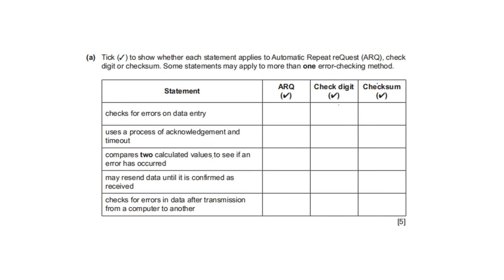Tick to show whether each statement applies to ARQ (automatic repeat request), check digit, or checksum. Some statements may apply to more than one method. Checks for errors on data entry — check digit. Uses a process of acknowledgement and timeout — ARQ. Compares two calculated values to see if an error has occurred — both check digit and checksum. May resend data until confirmed as received — ARQ. Checks for errors in data after transmission from one computer to another — checksum.